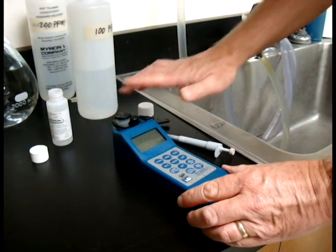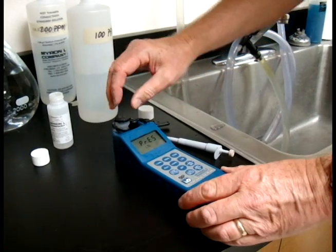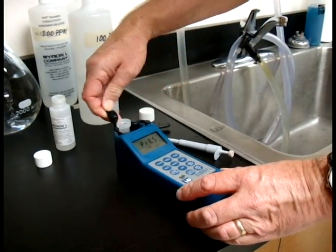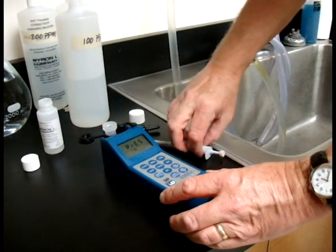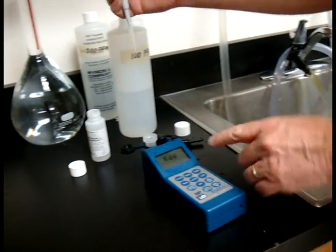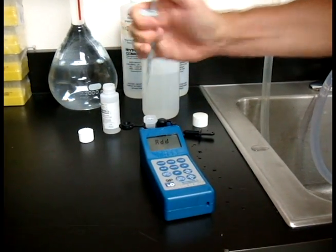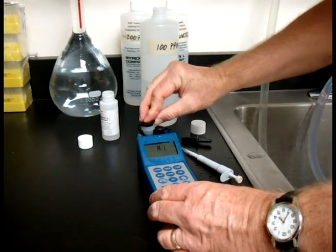Now it says press CAL. It's already got its number, so come over here and make sure you get your cap off first before you hit CAL. Pull this off slowly. Make sure that there isn't a solution attached to the cap. Hit your CAL button, and it's going to ask you for A1, reagent A1. Let's put that into our cell cup. Put the cap back on.